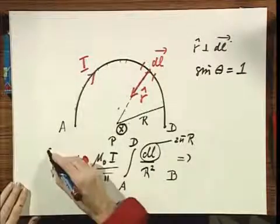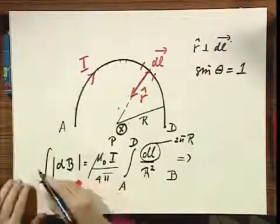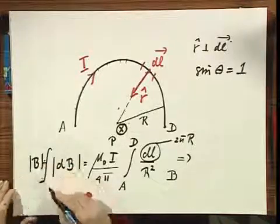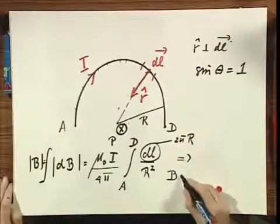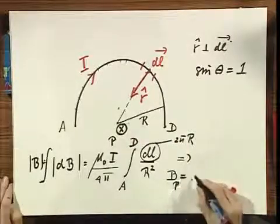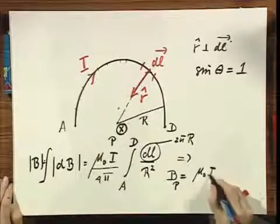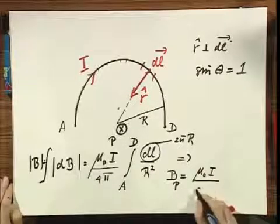Oh this should be the integral of dB, so this is really B. It's the integral of all these elements. So what comes out is that B at that point P equals μ₀ times I divided by 4R.